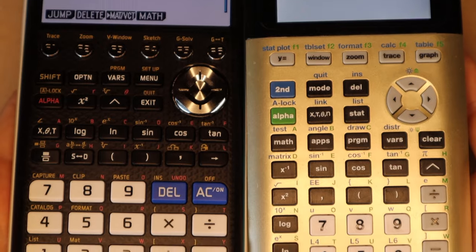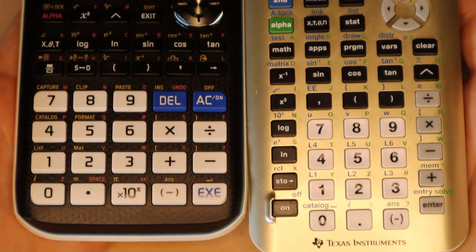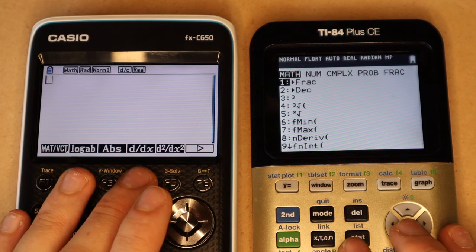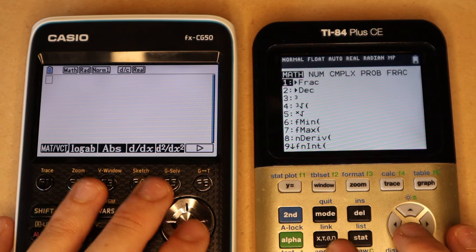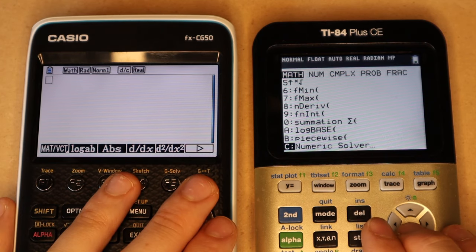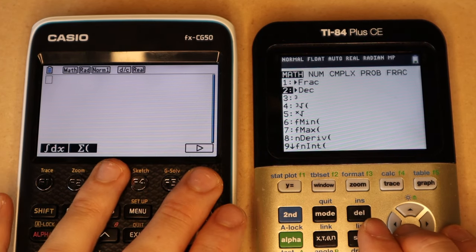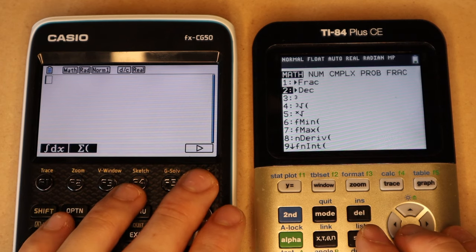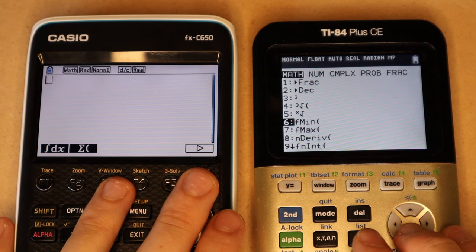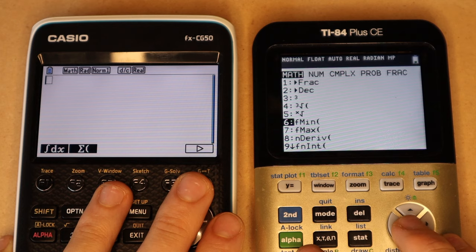So in addition to all the functions that appear on the keyboard here, each of these calculators has a menu for different functions that can be used in the calculation app. Here is the one on the Texas Instruments, and then here is the one on the Casio. Both let you do things like derivatives, definite integrals, and summations.